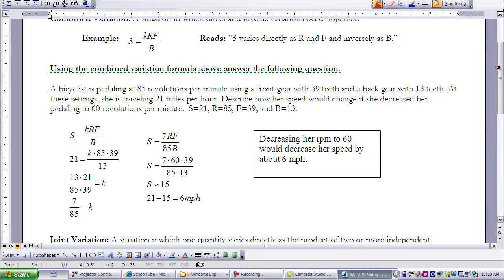So now that we have our value for K, we can write a specific equation. So we're going to input our 7 over 85 into our formula in place of K. So I've written it here.